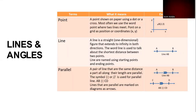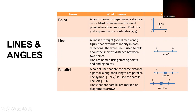Lines and angles. A point is shown on paper using a dot or a cross. Most often we use a point where two lines meet, or as a position or coordinate on a grid. For example, coordinate B(2,3) means X is at position 2 and Y at position 3.